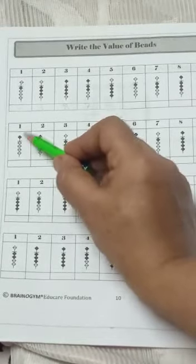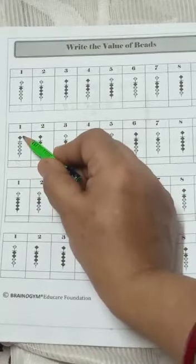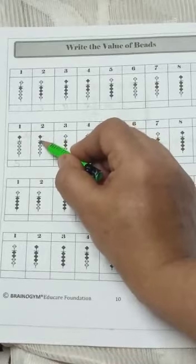It is only upper bead black. So answer will be 5. Upper beads value is 5. So we write here 5. So here is 5, 6.